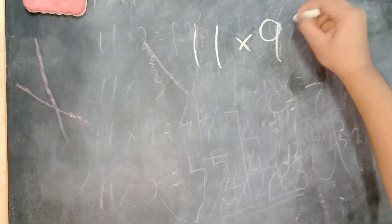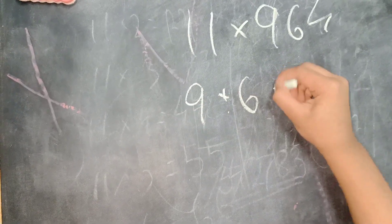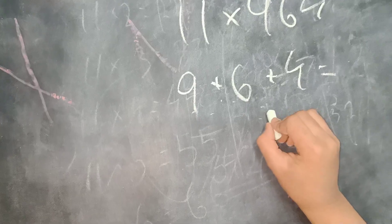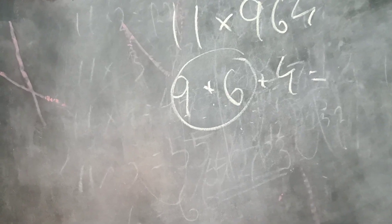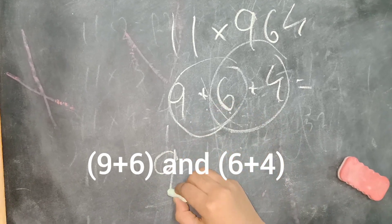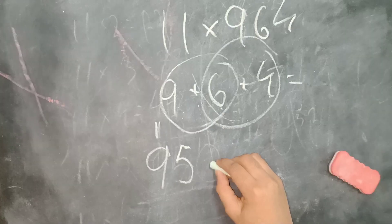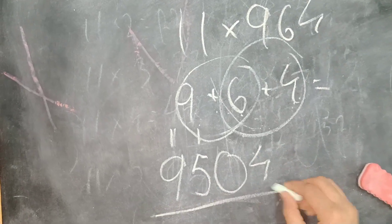Now I'm going to show you another one — 11 times 964. Let's add 9 plus 6 plus 4. First, write down the 9. We add 9 plus 6 and get 15 — write the 5 here and carry the 1 over here. Then we take the 4 and keep it down.